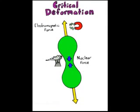However, when a free neutron disrupts the balance of an unstable nucleus, such as that of uranium-235, the nucleus becomes deformed, and the electromagnetic force overcomes the nuclear force. This is critical deformation.